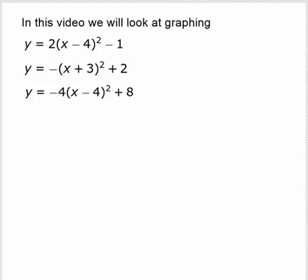In this video, we will be using function shift rules to graph some quadratic functions. Here we have y equal 2 times x minus 4 quantity squared minus 1, y equal negative of x plus 3 quantity squared plus 2, and y equal negative 4 times x minus 4 quantity squared plus 8.